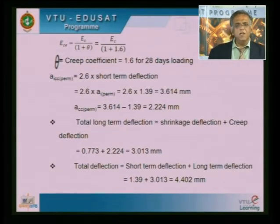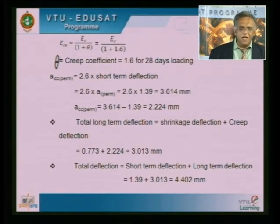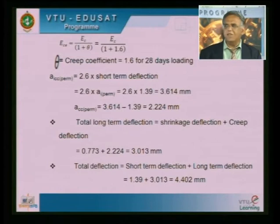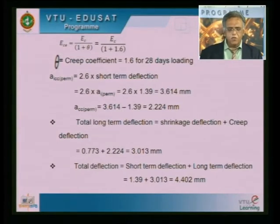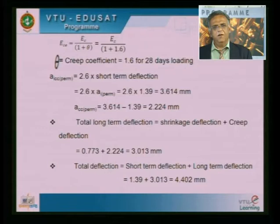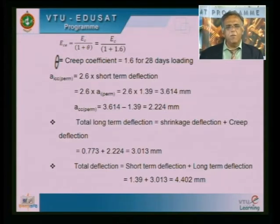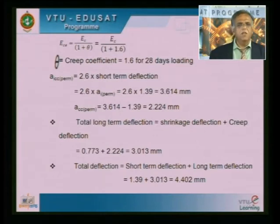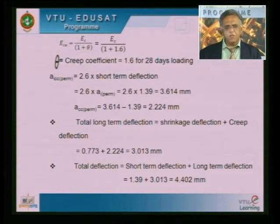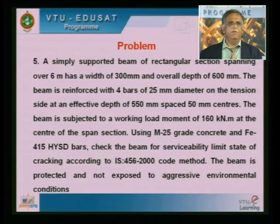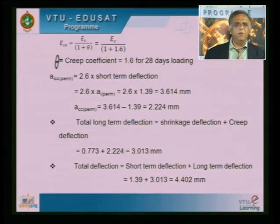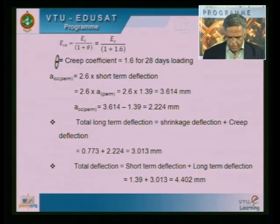The total long term deflection is the shrinkage deflection plus creep deflection, equal to 0.773 + 2.224 mm. We now have two components: short term deflection of 1.39 mm and long term deflection of approximately 3 mm. The total deflection is the summation of these two, coming to around 4.402 mm. The problem asked for both short term and long term deflection — that has been done. This completes the deflection problem on a simply supported beam.